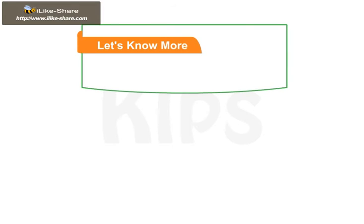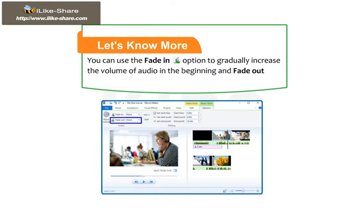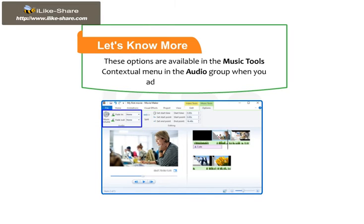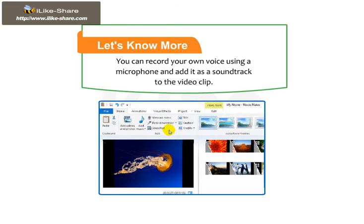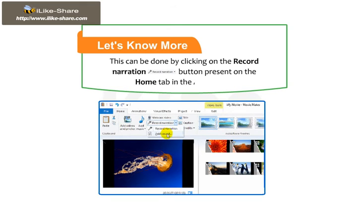Students, let's know more. You can use the Fade In option to gradually increase the volume of audio in the beginning, and Fade Out to gradually decrease it in the end. These options are available in the Music Tools contextual menu in the Audio group when you add an audio to a clip. You can also record your own voice using a microphone and add it as a soundtrack to the video clip by clicking on the Record Narration button present on the Home tab in the Add group.